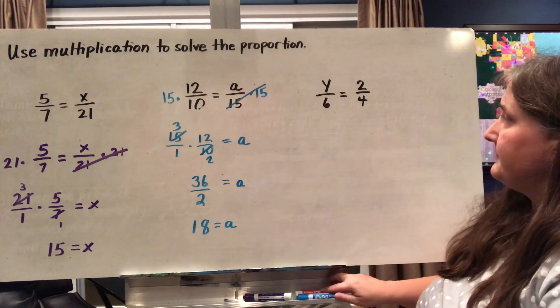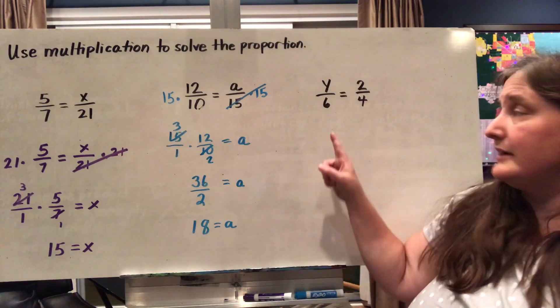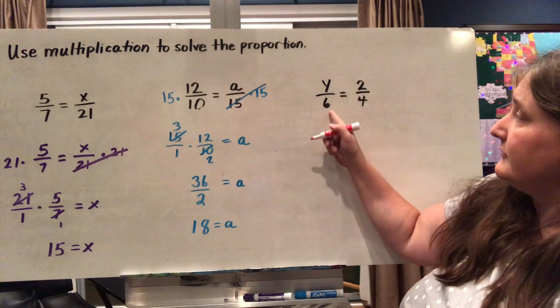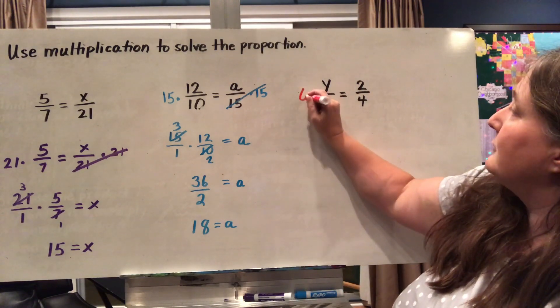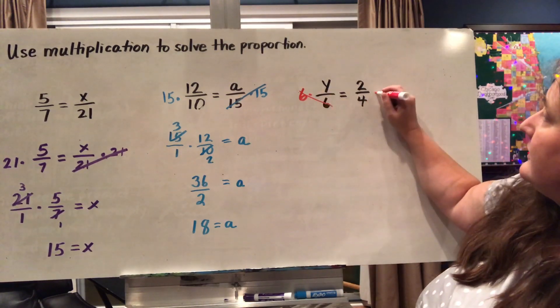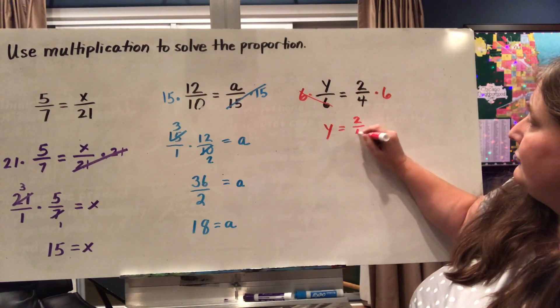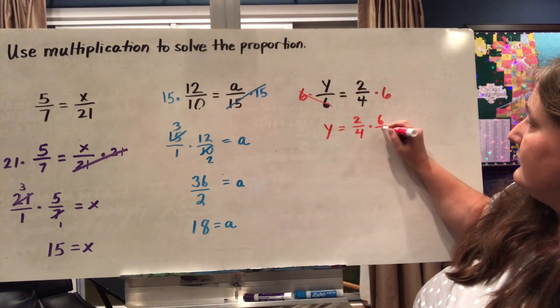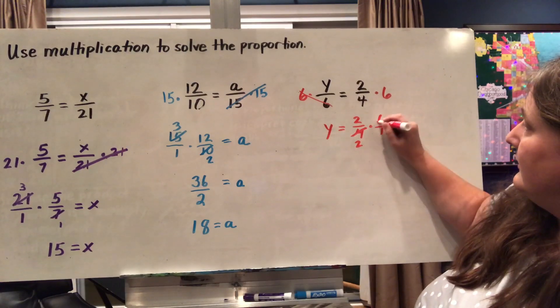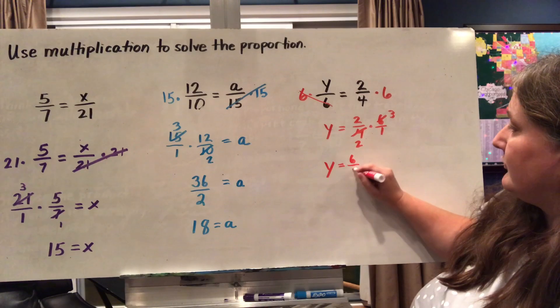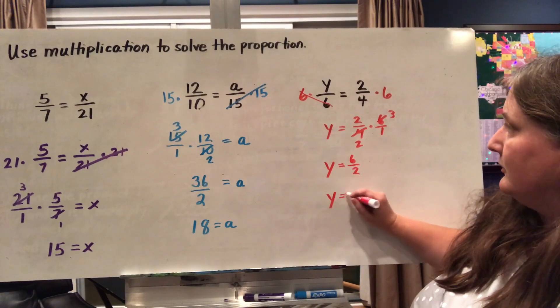Let's take a look at another one here. This time I have y divided by 6 equals 2 divided by 4. So to get rid of this divide by 6, I'm going to multiply both sides by 6 and it will cancel out here. On this side, 2/4 times 6 over 1, I can do some cross reducing here. And I get 6 on top over 2 on the bottom, or y equals 3.